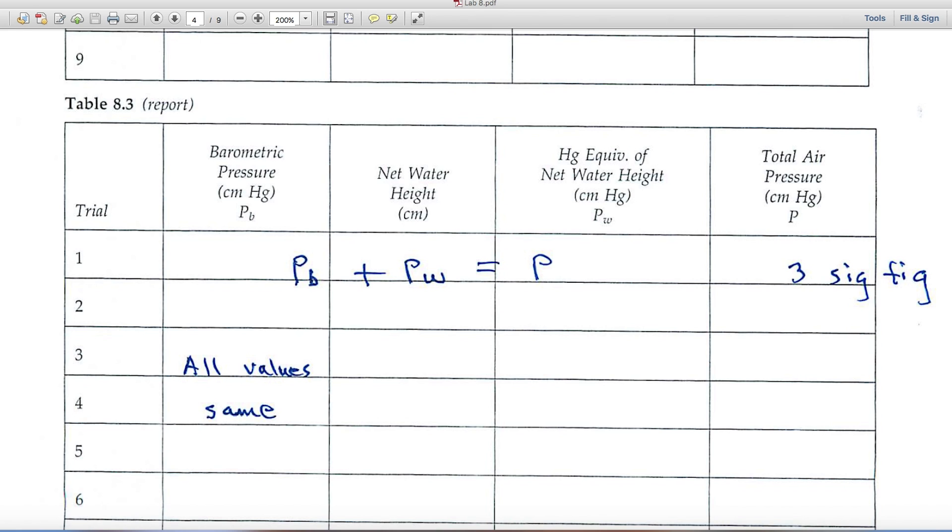Table 8.3, here we need the barometric pressure. All the values will be the same in this first column. The net water height, you'll gather that data, and then you'll convert that data into the equivalent in centimeters of mercury in the third column.